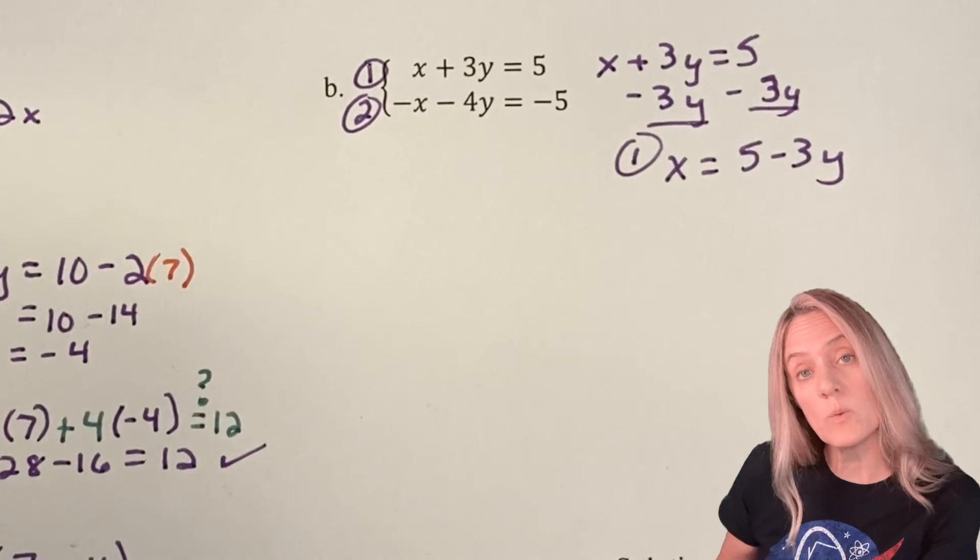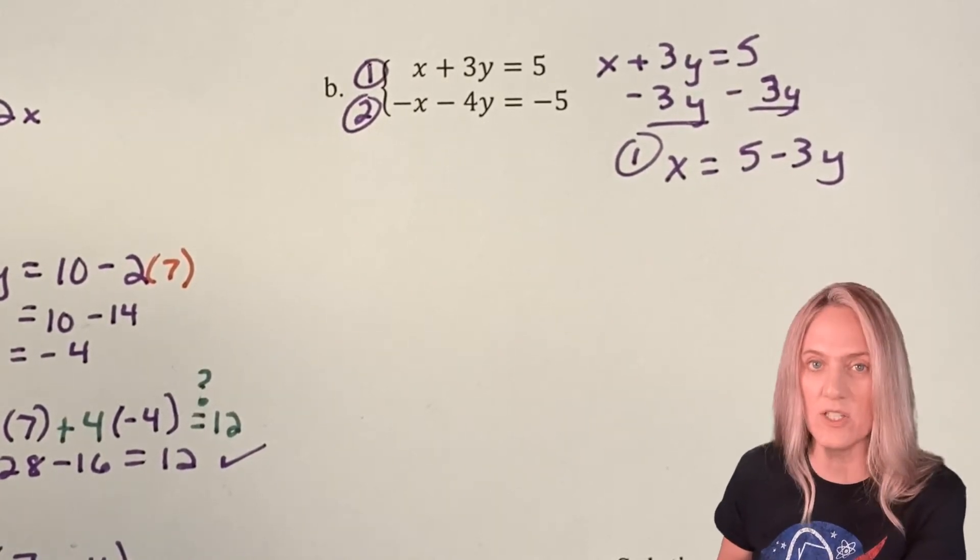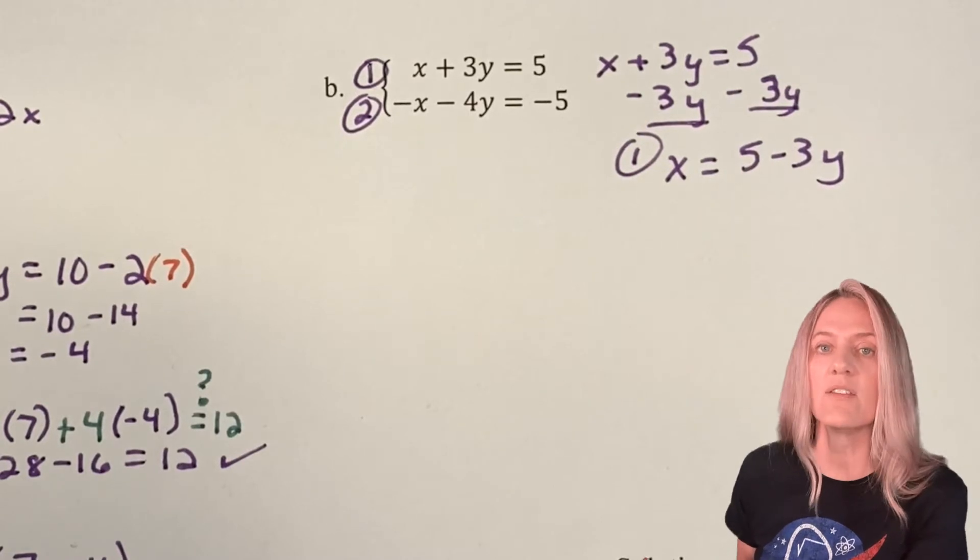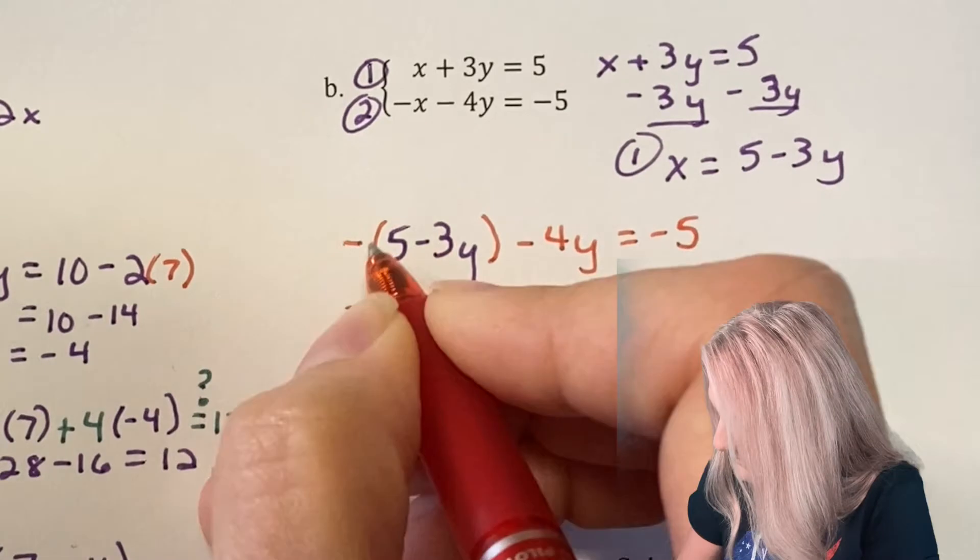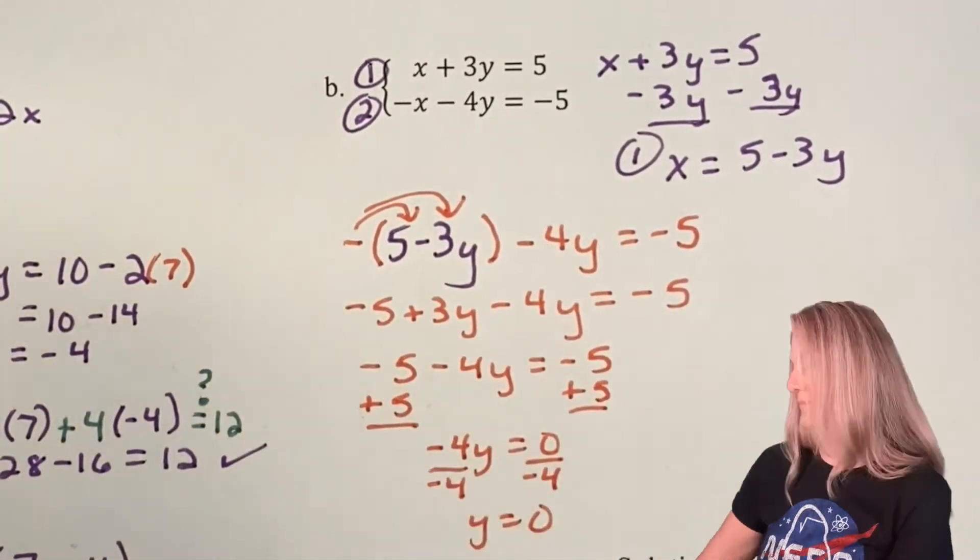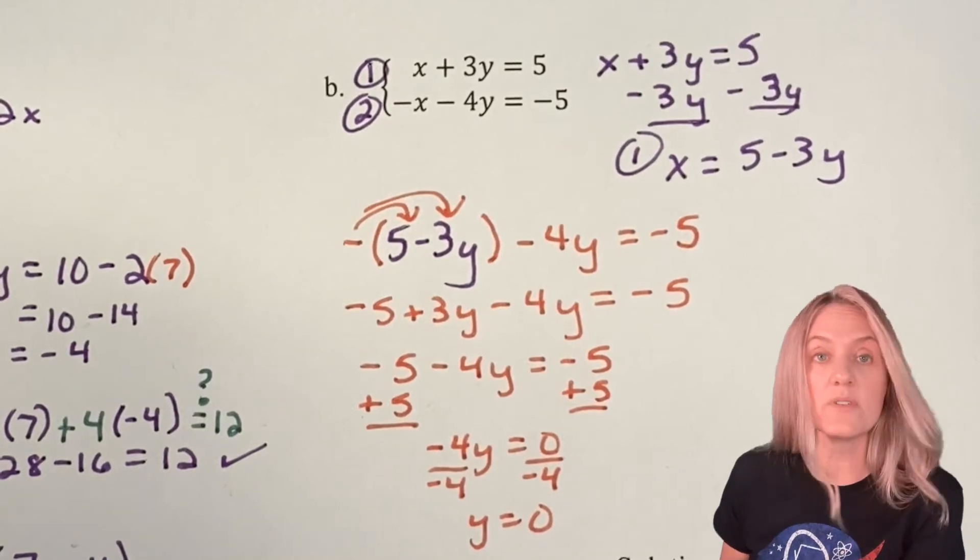Now I've solved equation 1 for x, I'm going to substitute the equivalent value into equation 2. But remember, we're substituting for x. After solving and showing all of my steps, we find that y = 0.